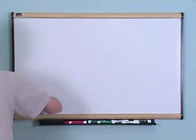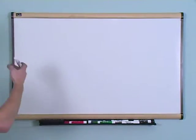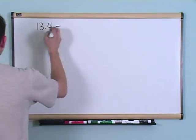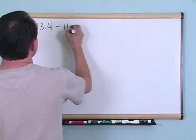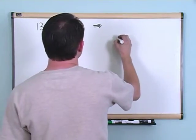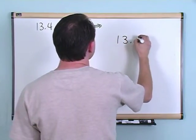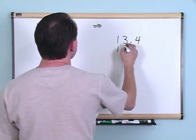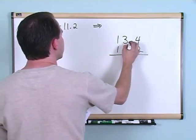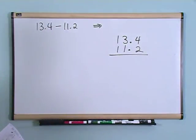I'm just going to do a couple more with addition and subtraction because it really is so similar. What if you have 13.4 minus 11.2? You're going to do the same thing you always do. Write the big number on top and the smaller number underneath, and line these decimal points up one underneath the other. Then you're going to subtract.